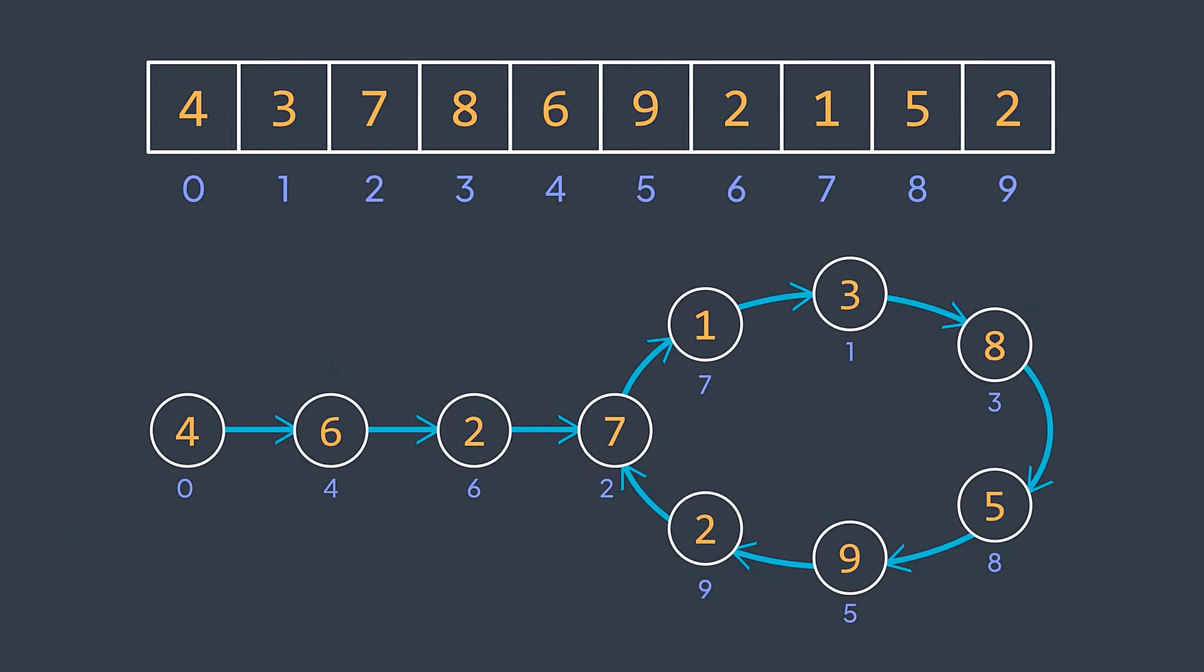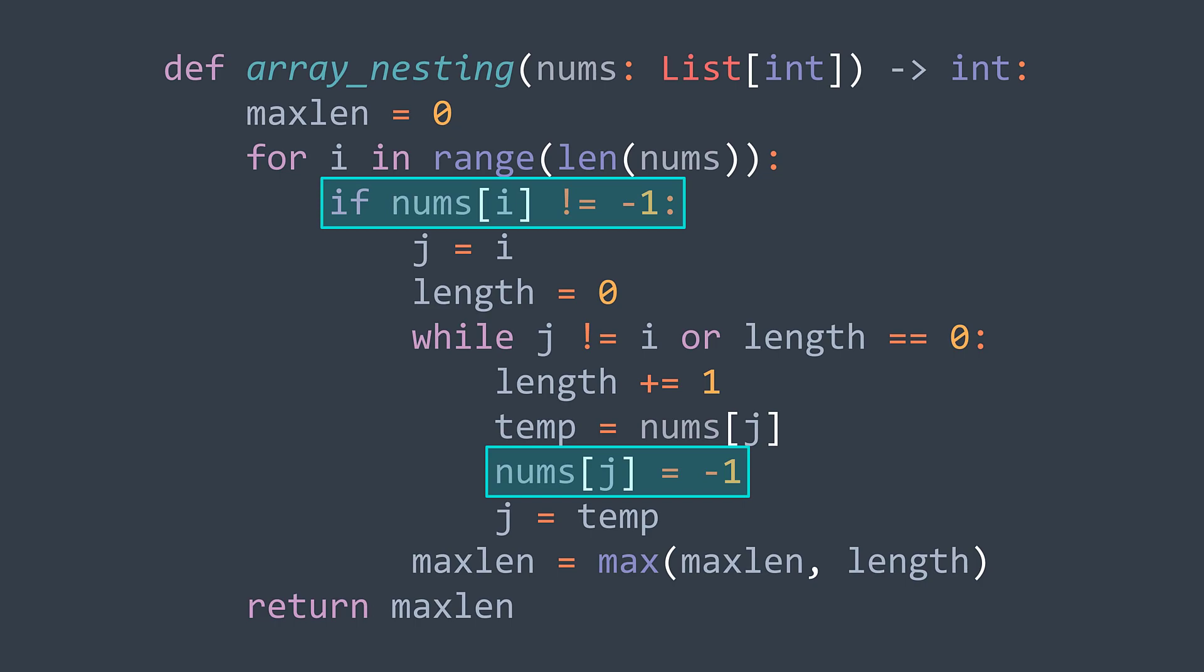And here we found an optimized solution to the problem. And we can have an optimized space complexity by not using the visited set. Instead of using a visited set, we just set each element that we visit to -1. There won't be any confusion because initial elements are between zero and n-1 inclusive. So finding an element whose value is -1 means that we already visited that cell.